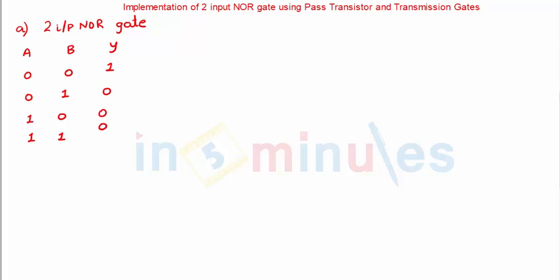Here when you see on your screen, the truth table of a two input NOR gate is written. When both my inputs are 0, my output is 1, and rest all three cases my output is equal to 0.